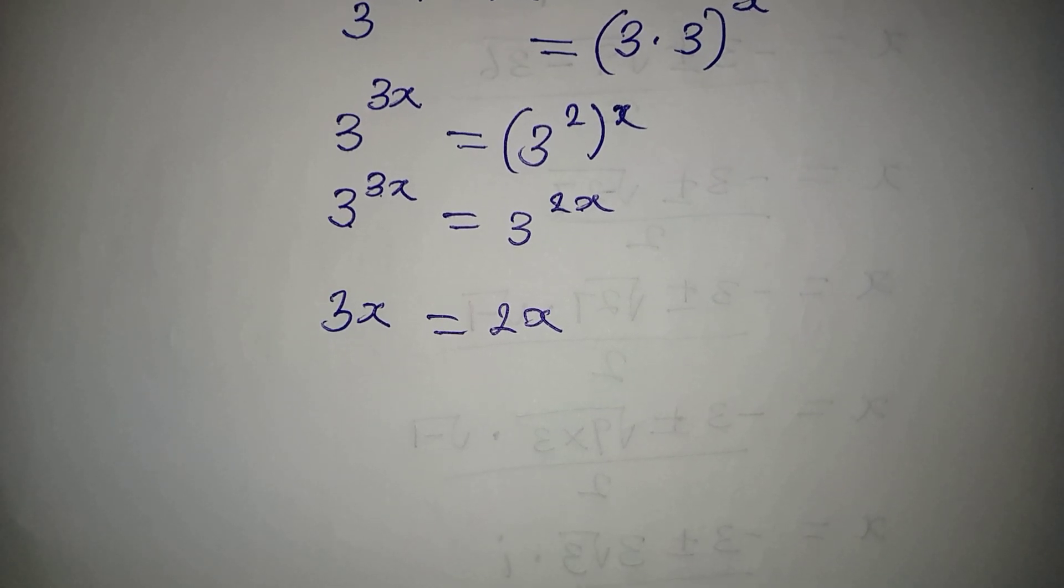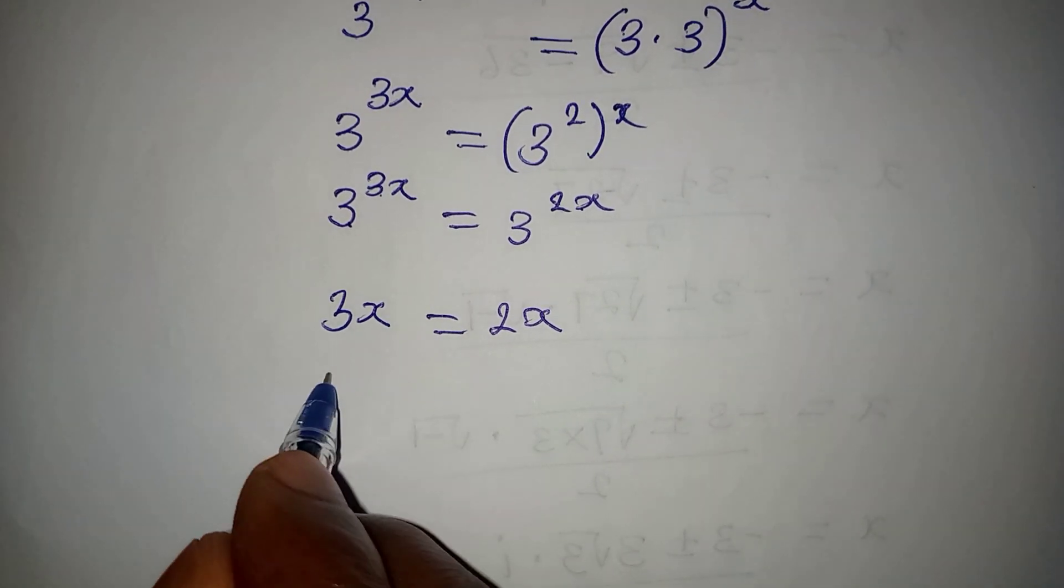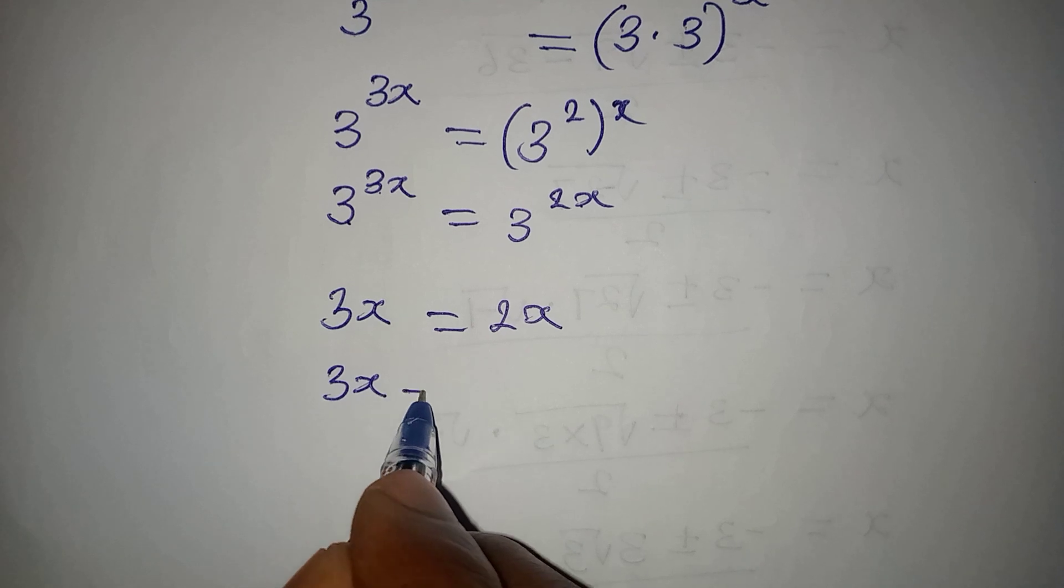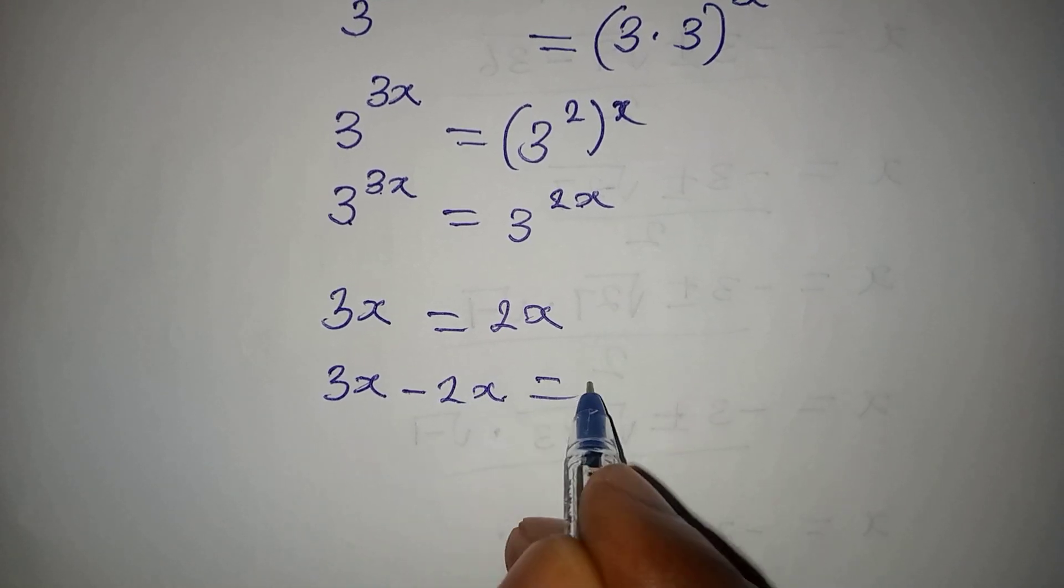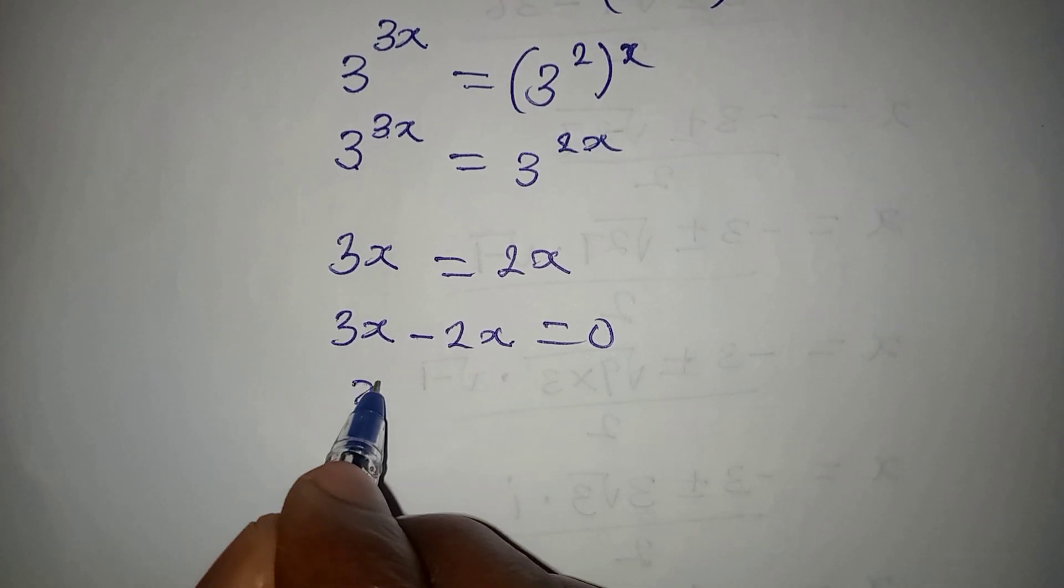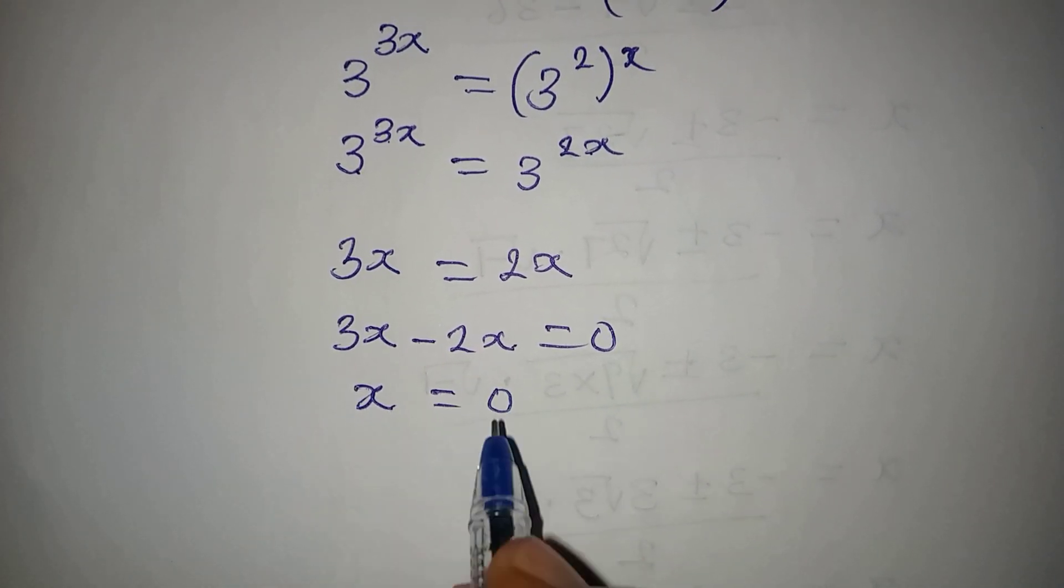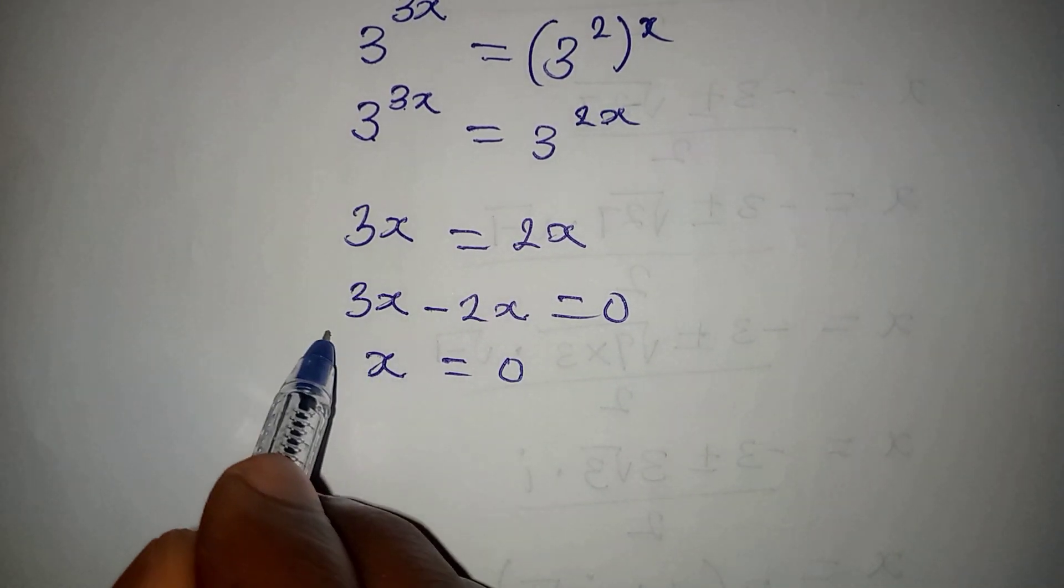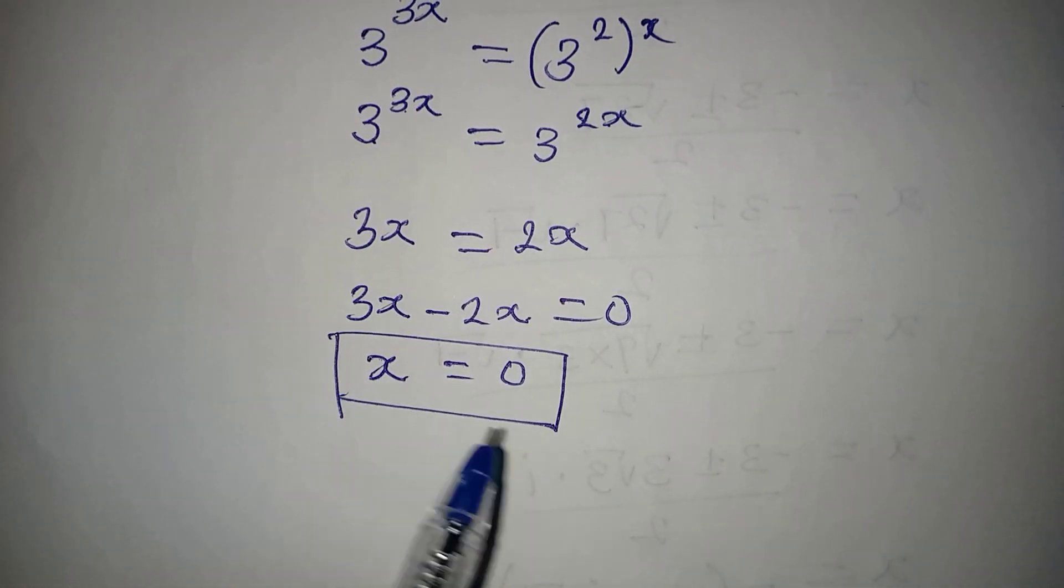We bring everything to the left, so we have 3x minus 2x giving us 0. Then 3x minus 2x gives us 1x, which equals 0. So x equals 0 is the value that will satisfy the equation.